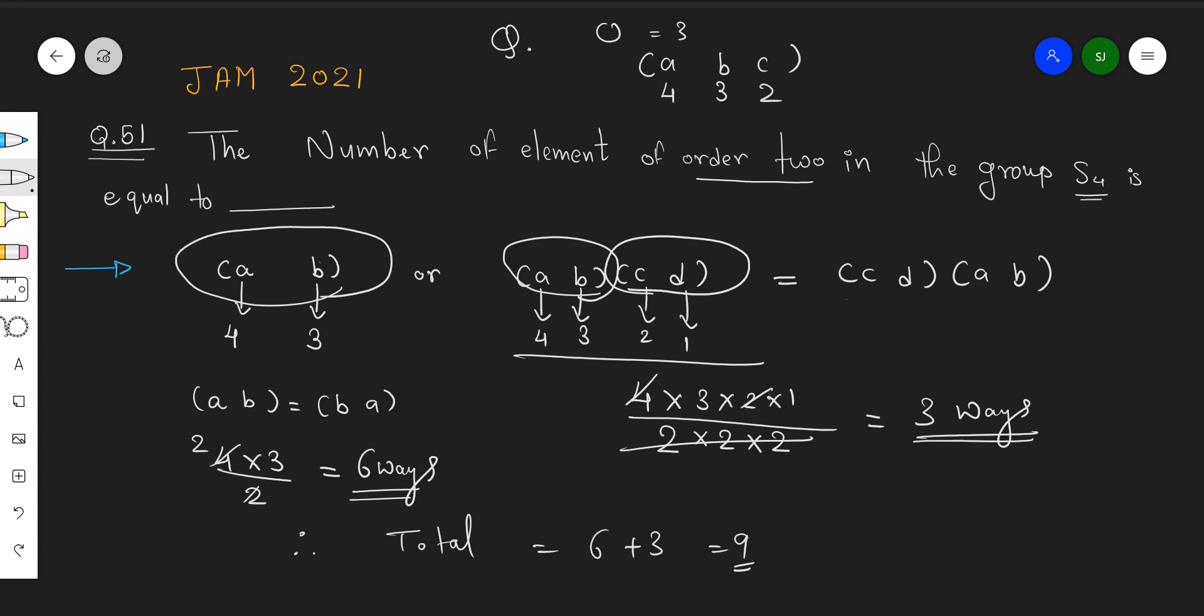Now we know that the cycles remain the same if we have a cyclic change. That means this is same as CAB and that is same as BCA. Whatever the answer is, I will divide it by 3. I get 4 times 3 times 2 divided by 3, so total 8 elements of order 3 in S4.